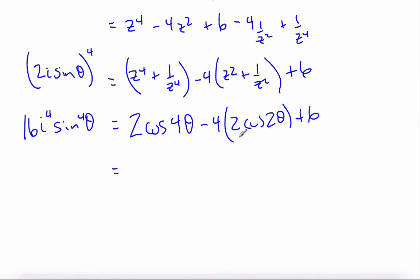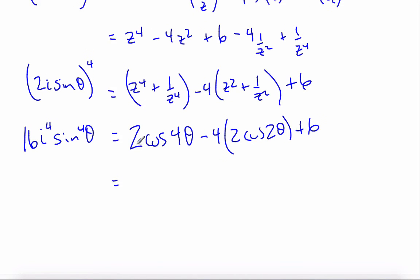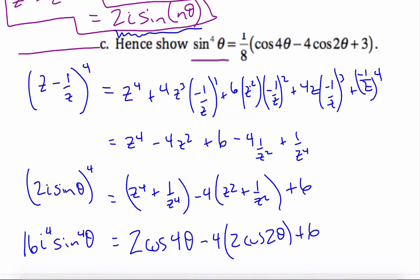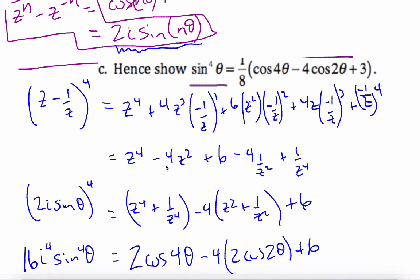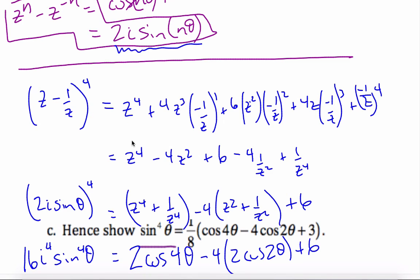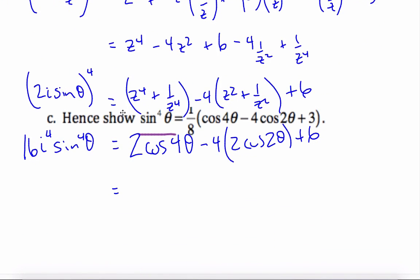If I look here, I know my final objective is to make the equation look like this. And so, keeping that in mind, I'm going to pull out, I want this 6 to be a 3, so I'm going to pull out a factor of 2. So 2 cosine 4 theta minus 4 cosine 2 theta plus 3.